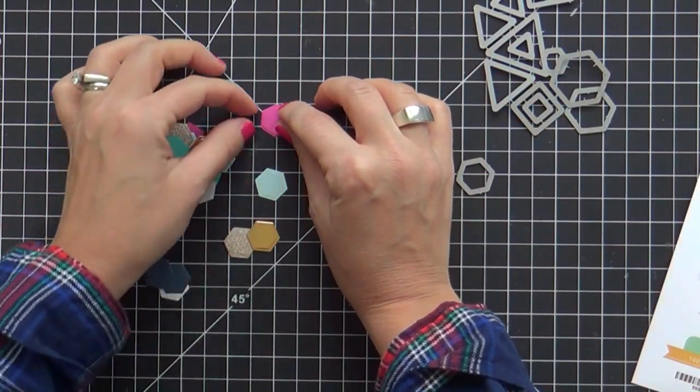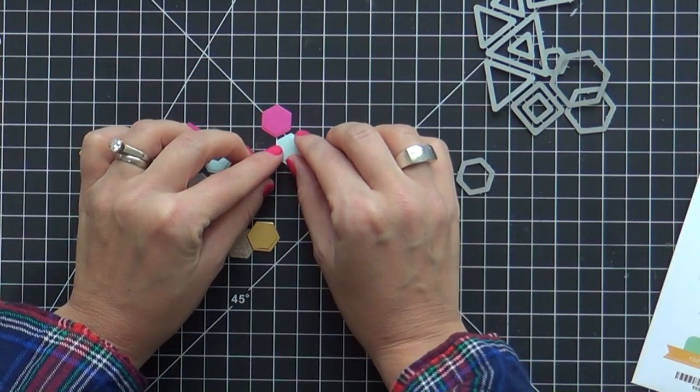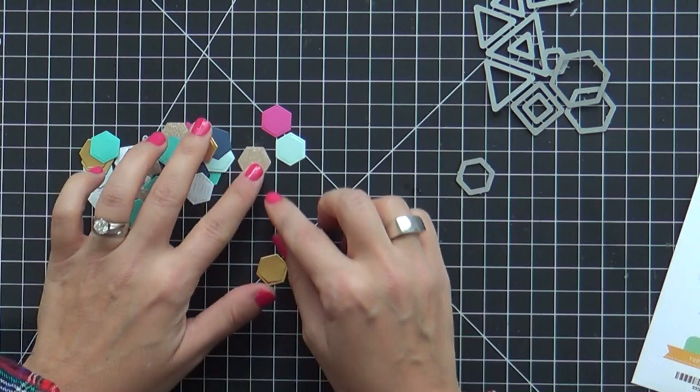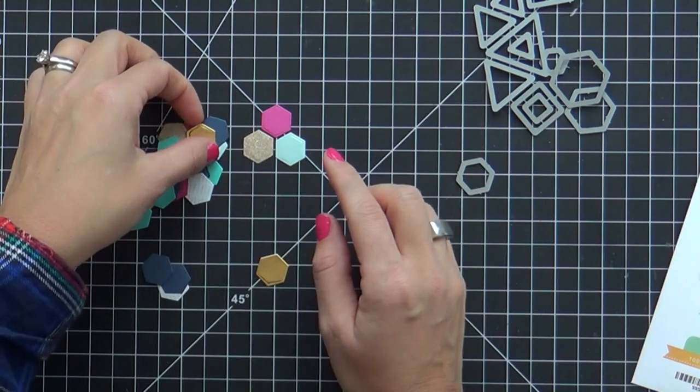So once I got all these five million of these hexagons die cut, like a good upper arm workout after eating all those Christmas cookies. I just got a good burn on my tricep. Not really. But anyhow.